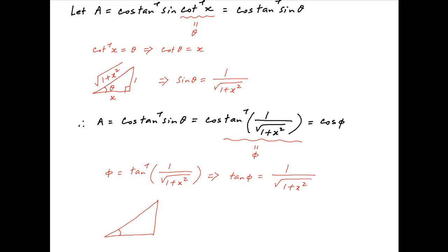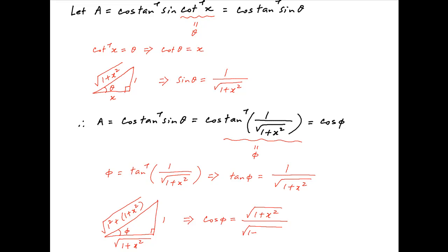Now consider a right angle triangle where the angle between the base and the hypotenuse is phi. Since tan phi is equal to 1 upon square root of 1 plus x squared, therefore the perpendicular is 1 and the base is square root of 1 plus x squared. Therefore using Pythagoras theorem, the hypotenuse is equal to square root of 1 plus 1 plus x squared. Therefore cos phi, which is equal to the base upon the hypotenuse, is equal to square root of 1 plus x squared divided by square root of 2 plus x squared.